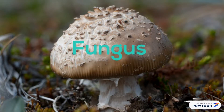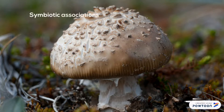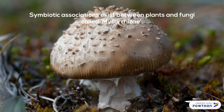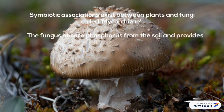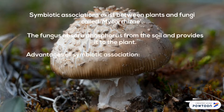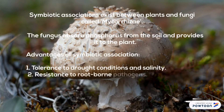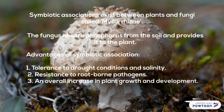Fungus: Symbiotic associations exist between plants and fungi called mycorrhizae. The fungus absorbs phosphorus from the soil and provides it to the plant. Advantages of this symbiotic association include: tolerance to drought conditions and salinity, resistance to root-borne pathogens, and an overall increase in plant growth and development.